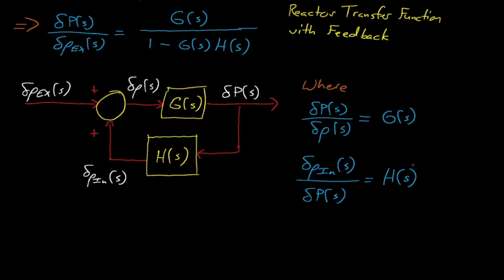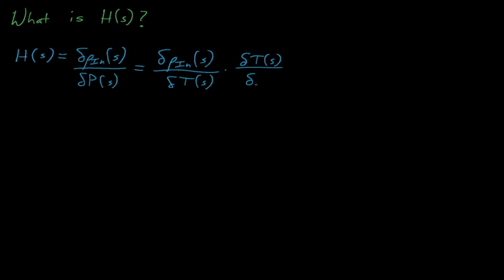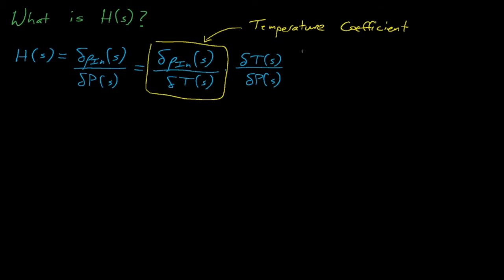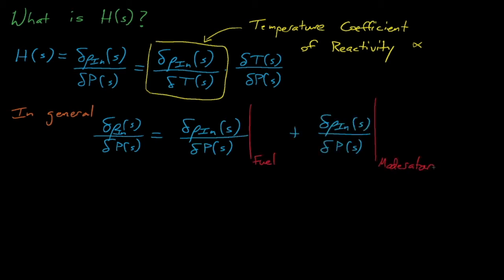So what is h(s)? Well, we can separate h(s) into two components: a delta-rho with respect to delta-T term, and a delta-T with respect to delta-power term. The derivative of rho with respect to temperature is known as the temperature coefficient of reactivity, alpha. We can have temperature coefficients that are a function of the fuel temperature, the moderator temperature, and really any temperature in the reactor, but all these coefficients are generally represented by the variable alpha.